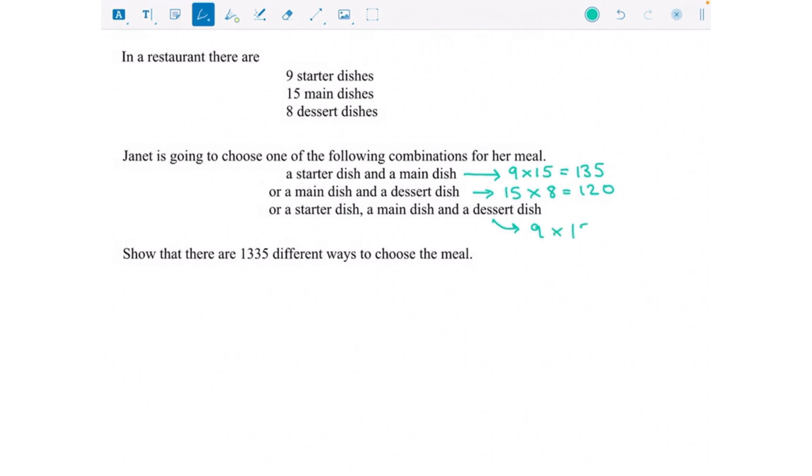And then finally, starter times main times dessert if we're having all three. So 135 we already know, multiply that by eight is 1080. So total different choices that she's got: she's got 135 options if she goes down the first route, add 120, add 1080.